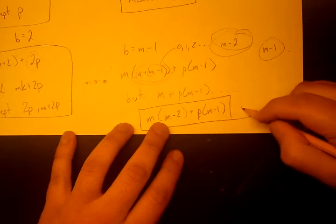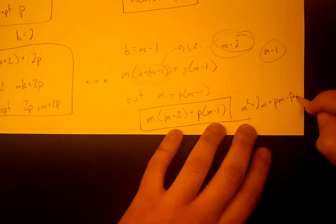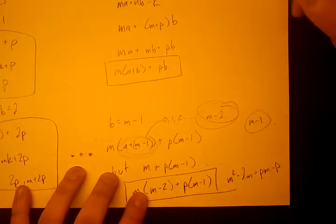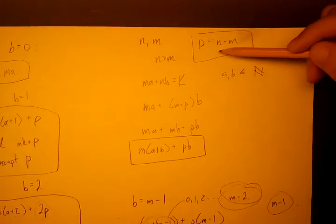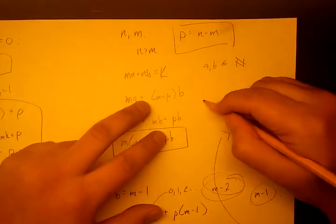Okay. So then if we evaluate this, we're going to get m² - 2m + pm - p. And remember, we will let p equal—p is up here, p is n minus m. So here again, I'll write it up here so we can see both at the same time. m² - 2m + pm - p.